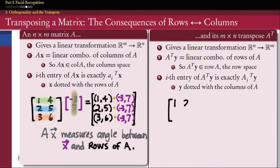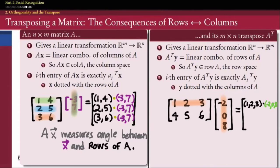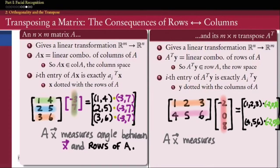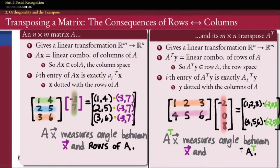If we flip the rows with the columns, we get exactly the opposite story. When we multiply A transpose by some vector, the entries of that product are the dot products of the rows of A transpose with the vector — but the rows of A transpose are nothing more than the columns of A. So when multiplying A transpose by a vector, we're measuring the angle between X and the columns of A. If we want the angle between X and the rows of A, look at AX; if we want the angle between X and the columns of A, look at A^T X.